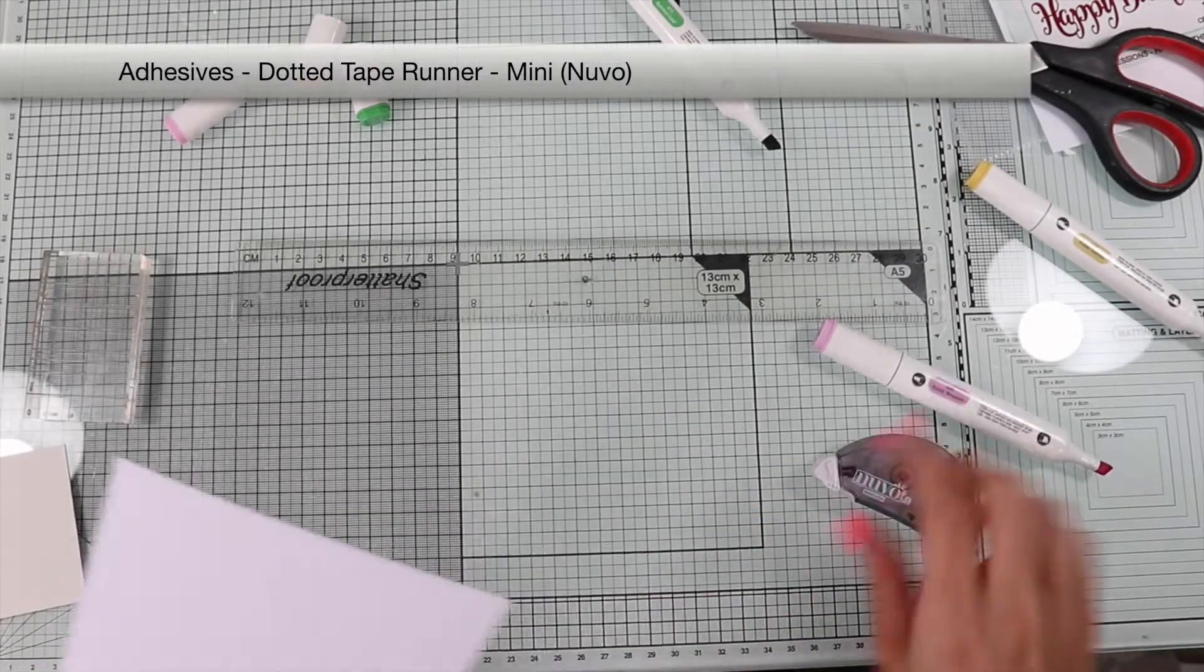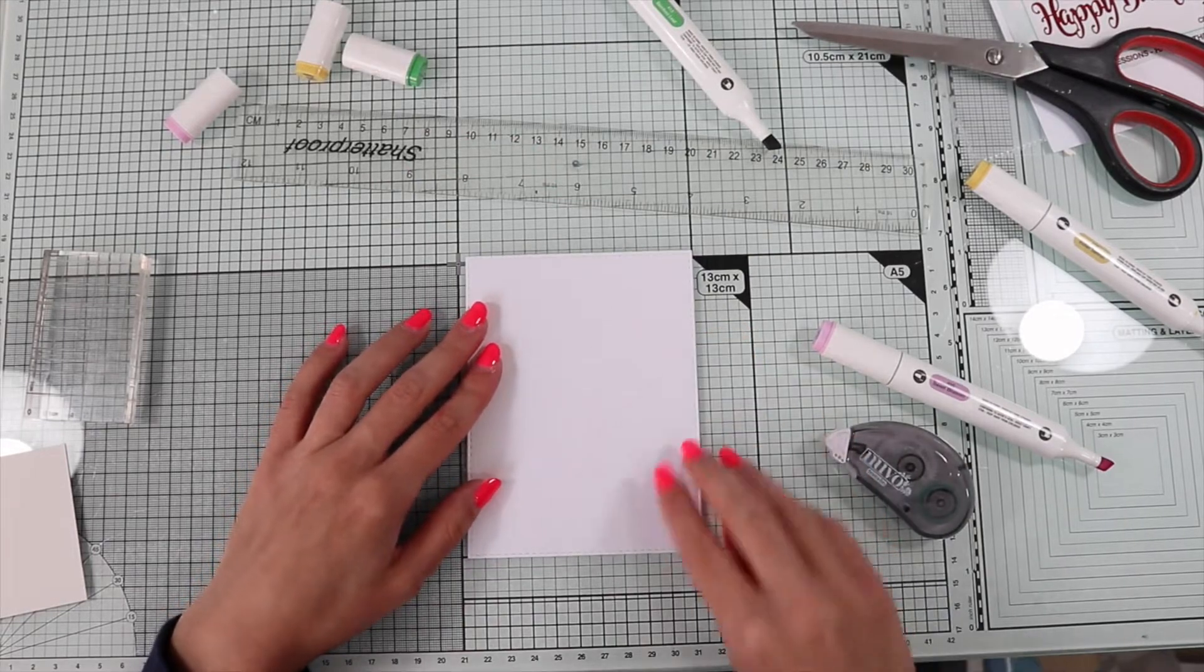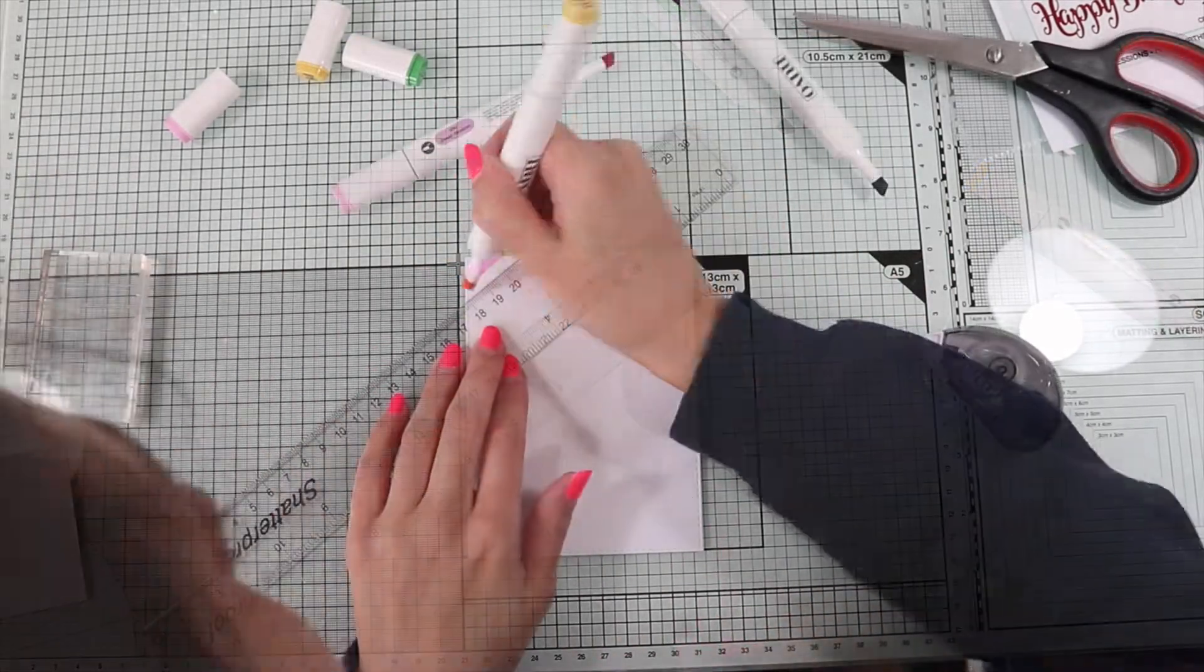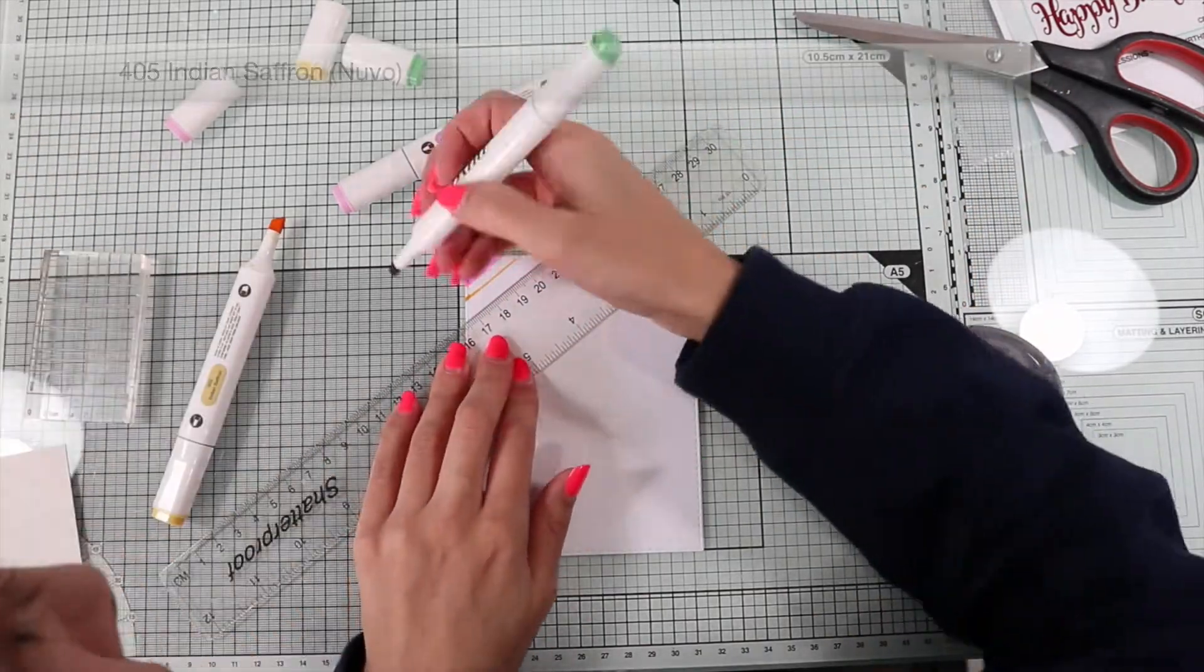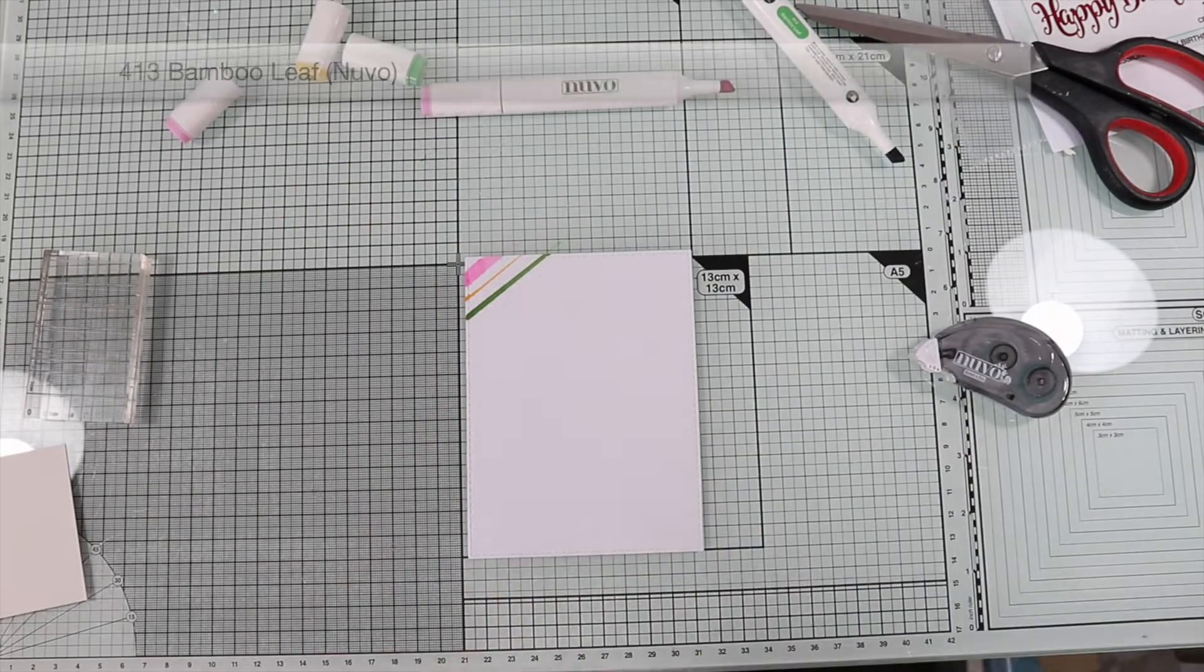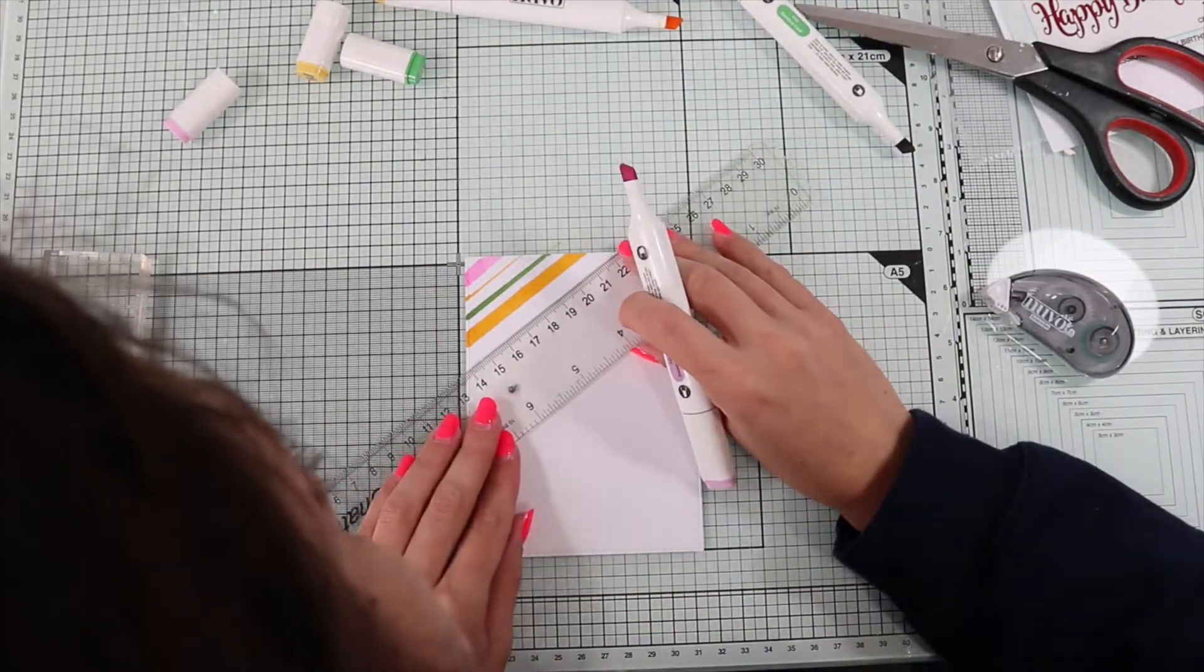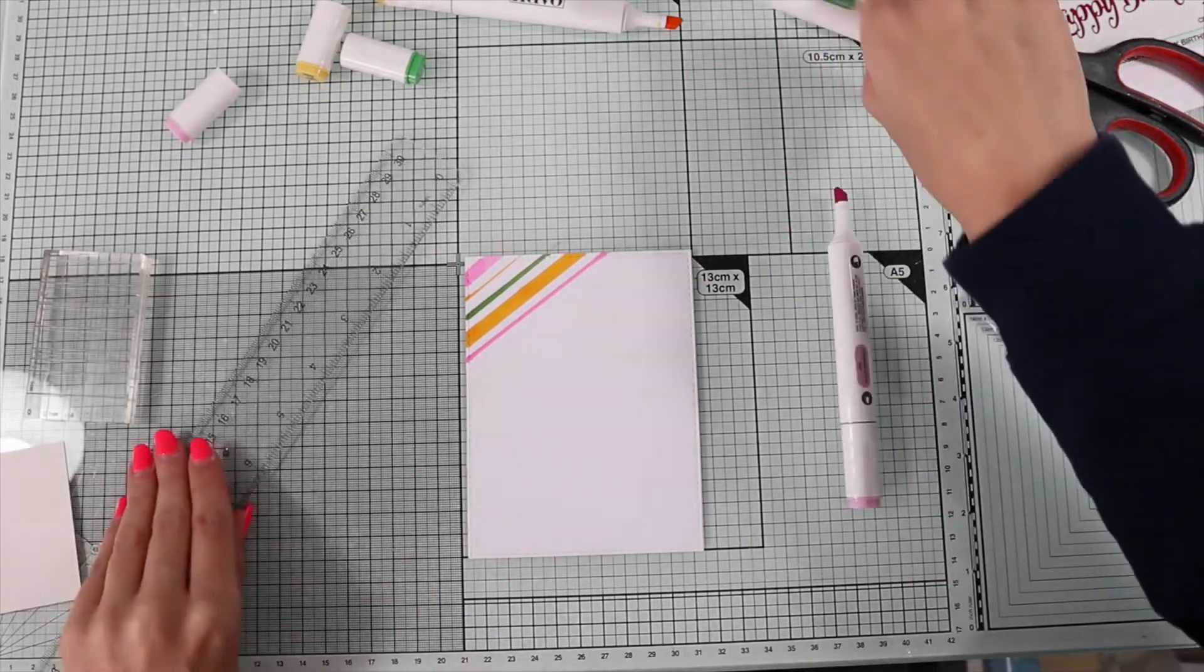As I already said at the beginning of the video, also for the second card I'm gonna use the three markers of the kit to create a background. This time I'm going to alternate the three colors, creating diagonal lines with different thickness, using the two tips of the markers. If you will try these techniques, remember to always clean the ruler between one color and another.